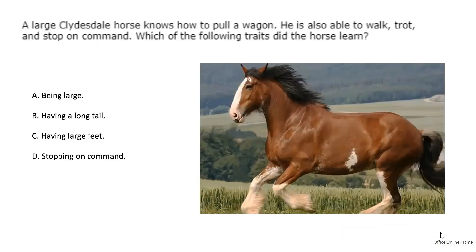A large Clydesdale horse knows how to pull a wagon. He is also able to walk, trot, and stop on command. Which of the following traits did the horse learn? A, being large; B, having a long tail; C, having large feet; or D, stopping on command? I'll give you just a moment before we continue.